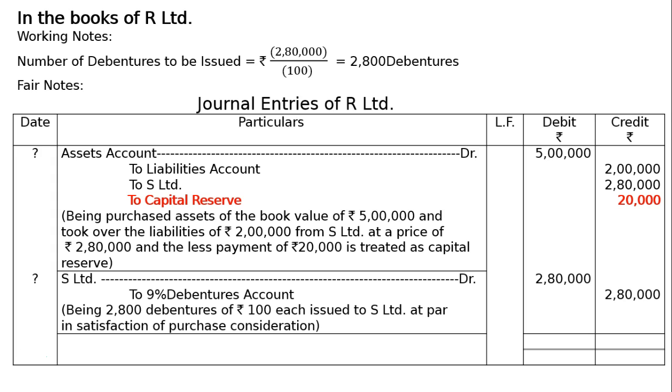The totalling will be Rs. 7,80,000 — both debit and credit columns. And this is the final answer.